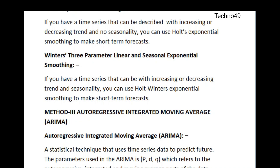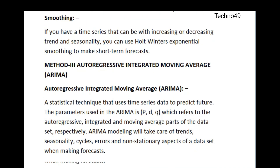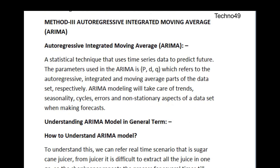Now let's talk about the Auto-Regressive Integrated Moving Average, also called ARIMA. It is a statistical technique that uses time series data to predict the future. The parameters used in ARIMA refer to the auto-regressive, integrated, and moving average parts of the data. ARIMA modeling takes care of trends, seasonality, cycles, errors, and non-stationary aspects of the dataset when making forecasts.